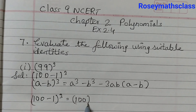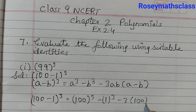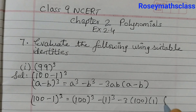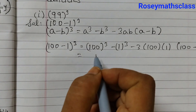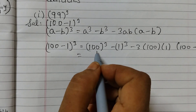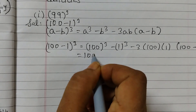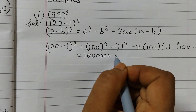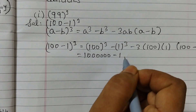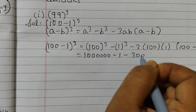So we expand: 100³ minus 1³ minus 3 × 100 × 1 × (100 - 1). Now 100³ means 100 × 100 × 100, which gives 6 zeros, so it equals 1,000,000. Then 1³ is 1, and 3 × 100 is 300.